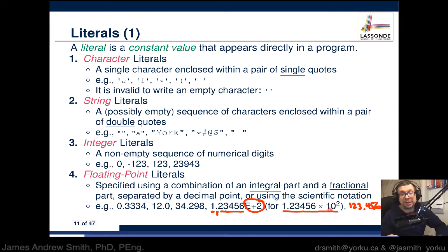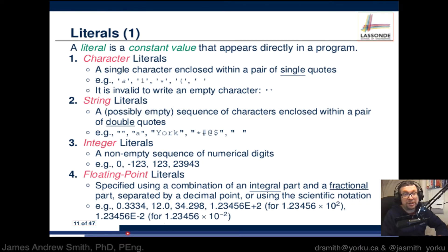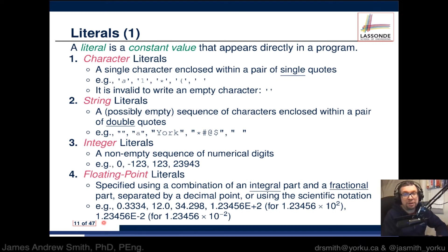You can represent small numbers — a number that would be less than 1 — by going the other way, by taking that exponent and making it negative. So for instance, if you wanted to represent a number smaller than 1, instead of multiplying by 100 you want to divide by 100. You would say 1.23456 times 10 to the power of negative 2, and that would give you a solely fractional number.